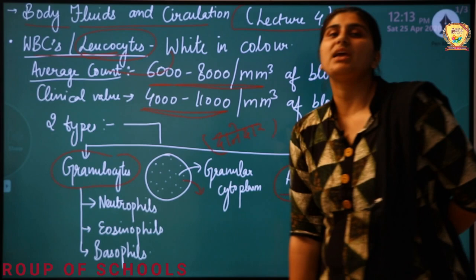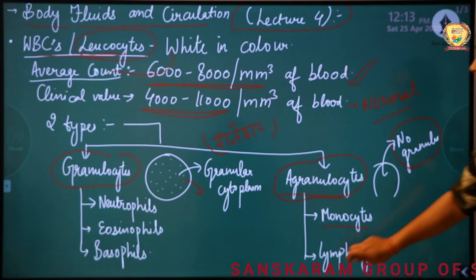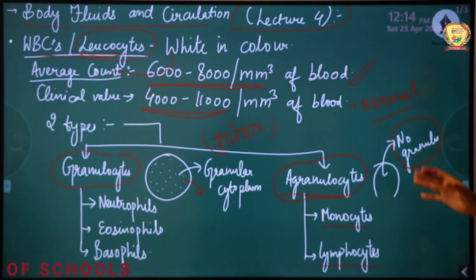Granulocytes are of three types: neutrophils, eosinophils, and basophils. Talking about agranulocytes, they are mainly divided into two categories: monocytes and lymphocytes.